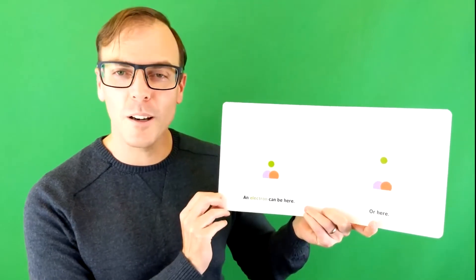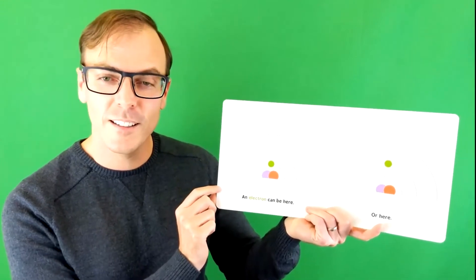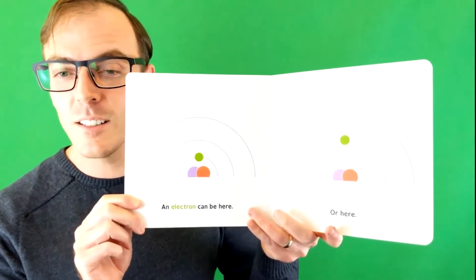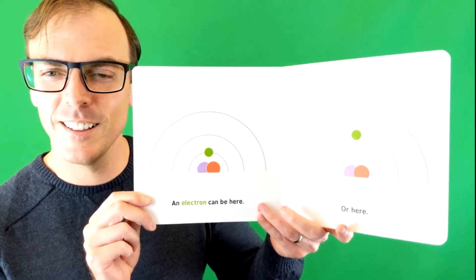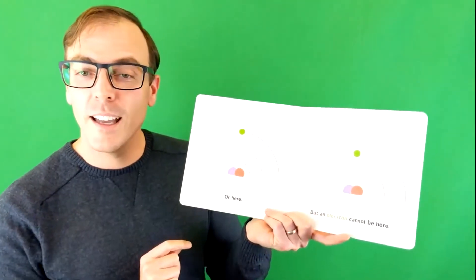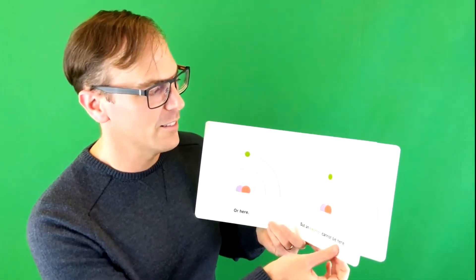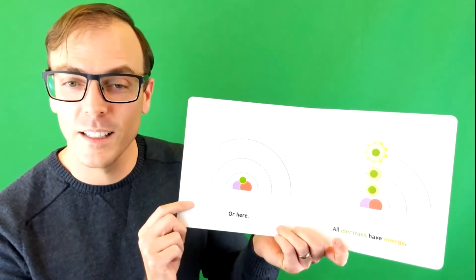Something special about electrons I want to share with you. An electron can be here or here. Can you guess where else an electron might be? Very good. It can be up here. But an electron cannot be here. An electron cannot be here.